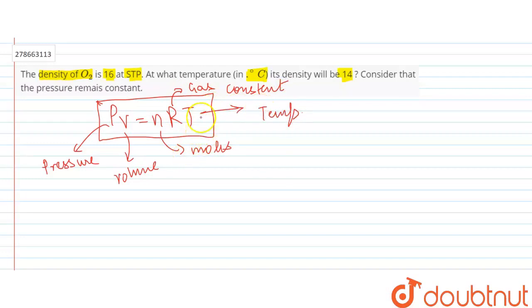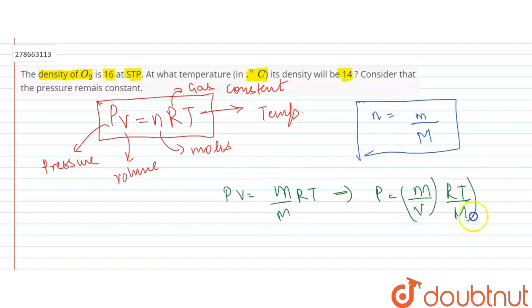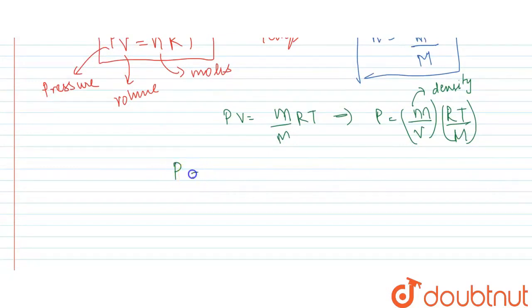We will use this formula. Now, we need one more thing: number of moles n equals given mass over molecular mass. When we substitute the n value into our formula, it becomes P equals ρRT over M, where M is molecular mass and ρ is density.